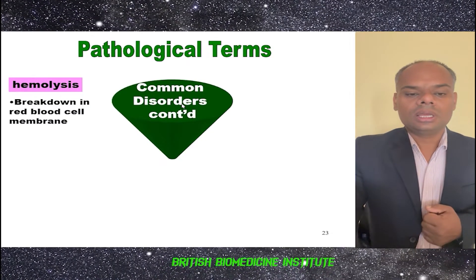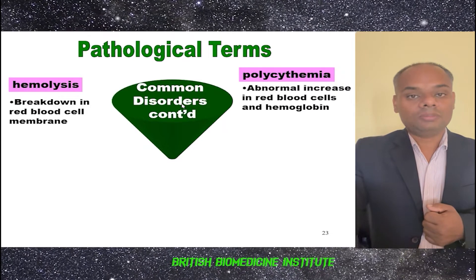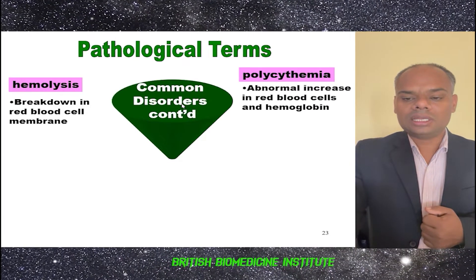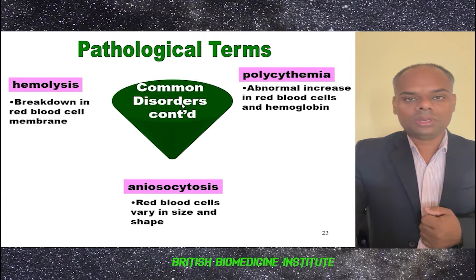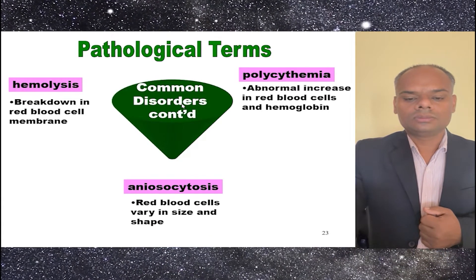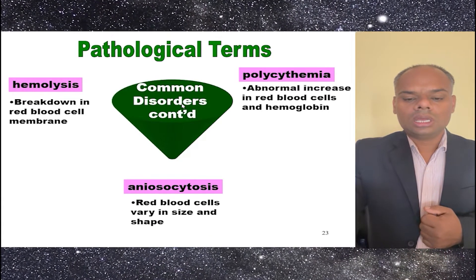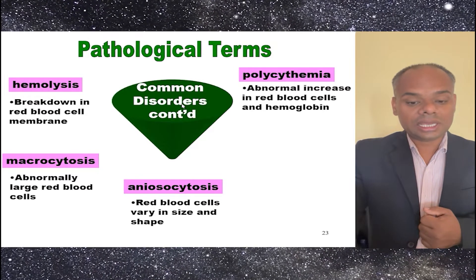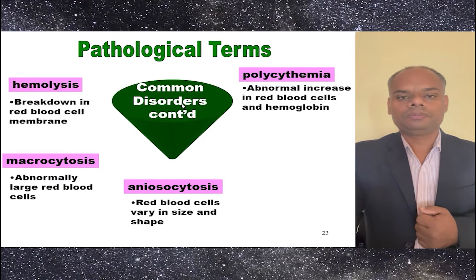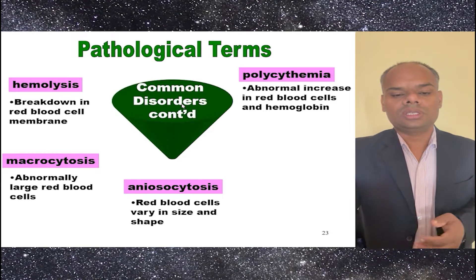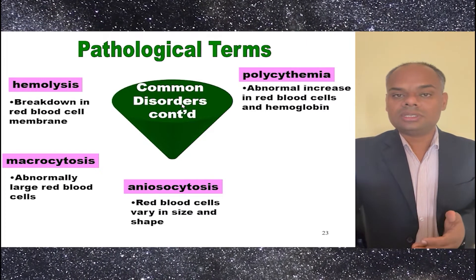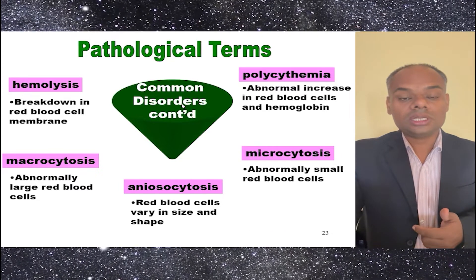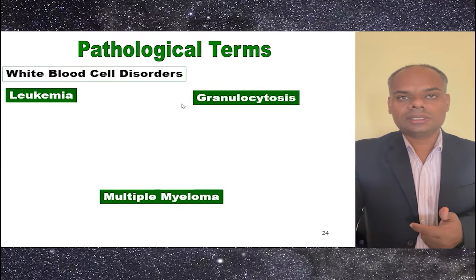Hemolysis is the breakdown of the RBC cell membrane. Polycythemia is an abnormal increase in RBC cells and hemoglobin. Anisocytosis means RBC cells vary in size and shape. Macrocytosis refers to abnormally large RBC cells, and microcytosis refers to abnormally small RBC cells.